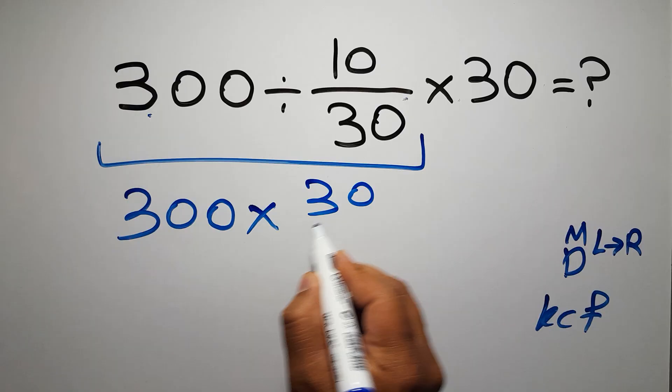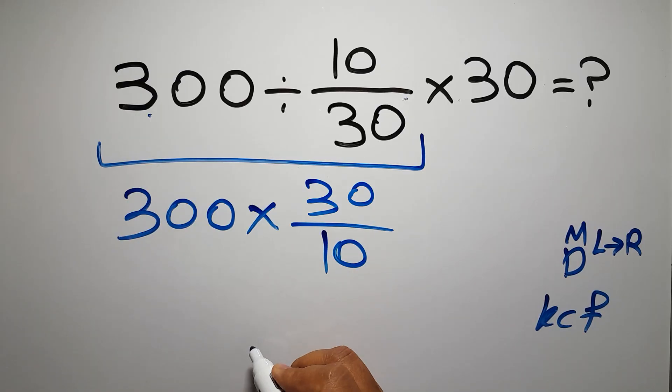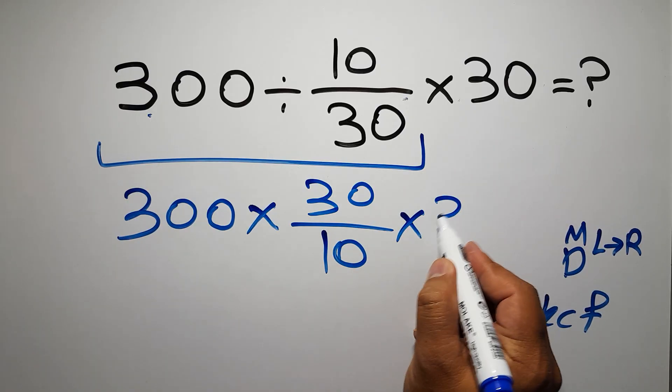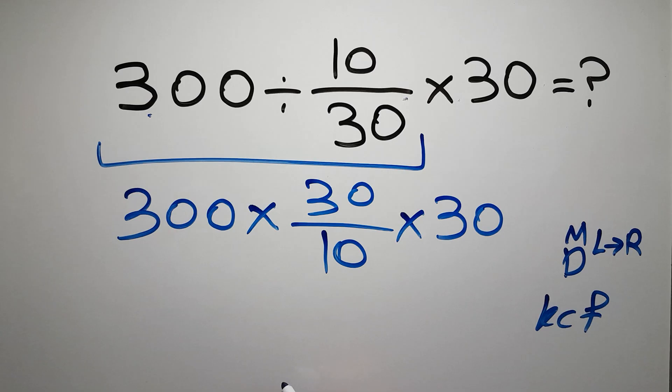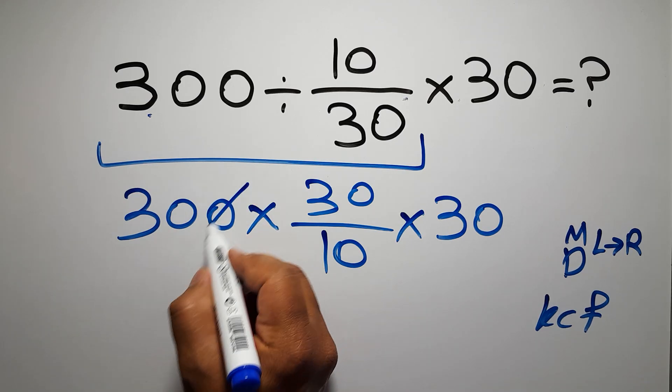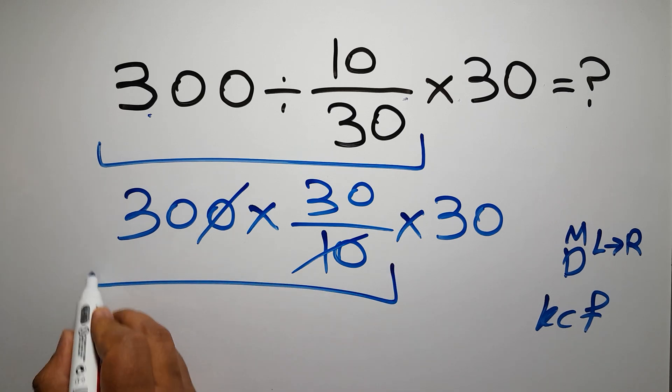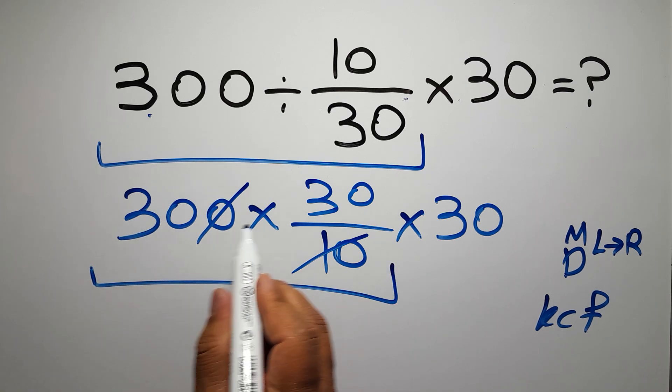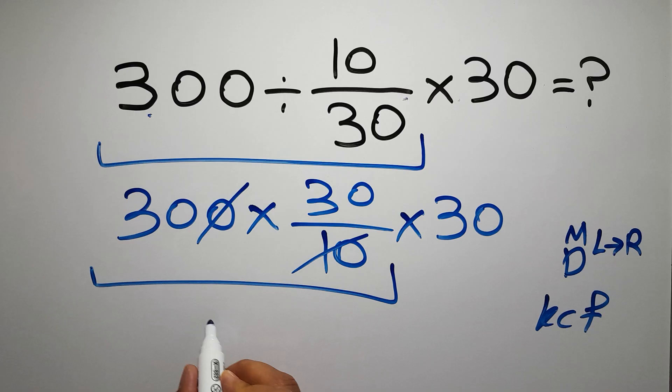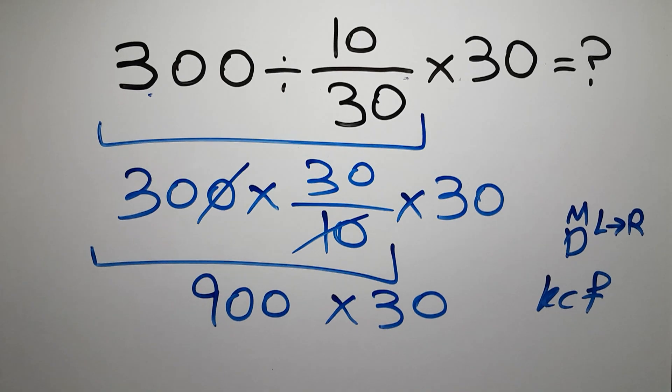And times 30. Now we can easily cancel this zero and this 10, so here we have 30 times 30, which equals 900, and 900 times 30, which equals...